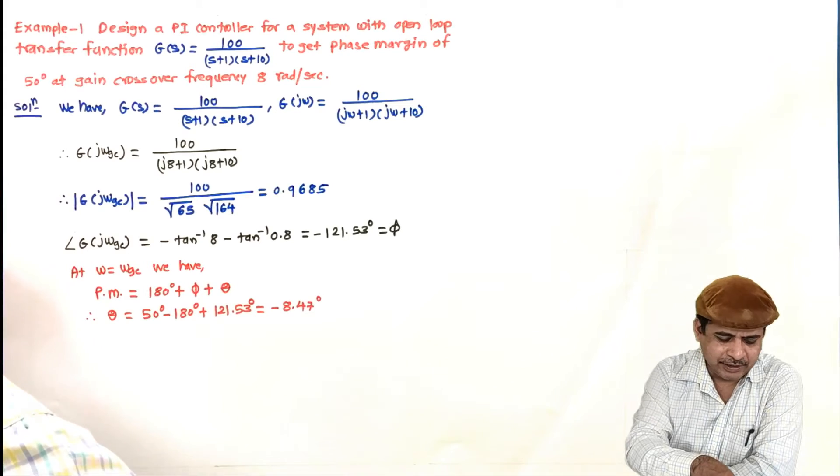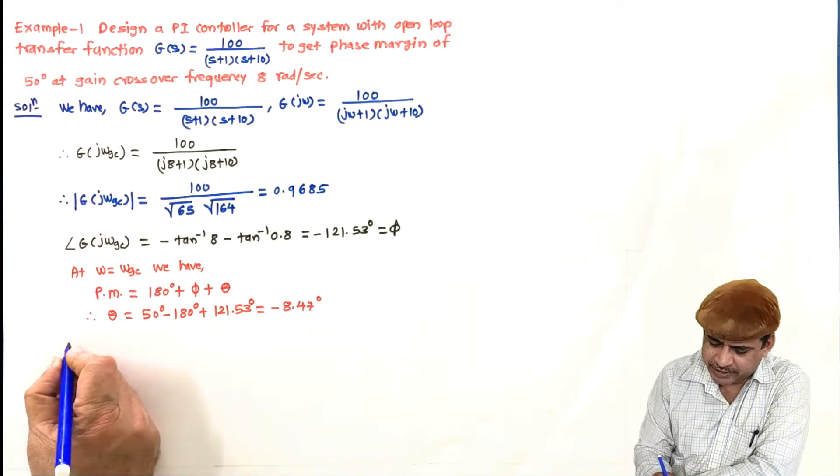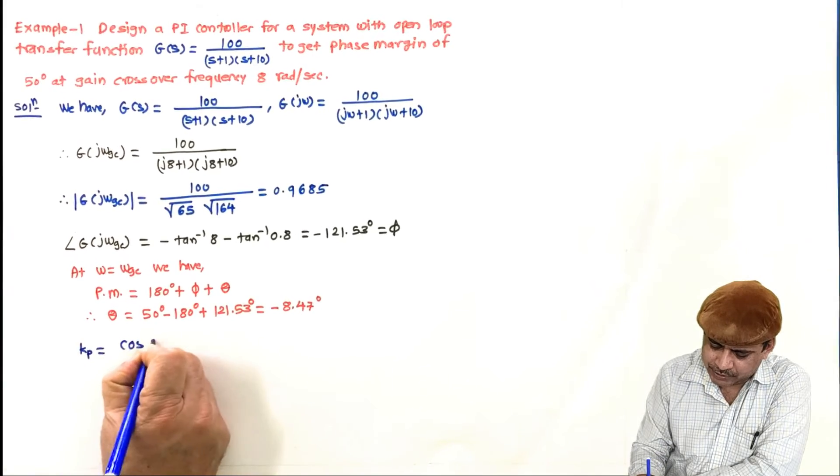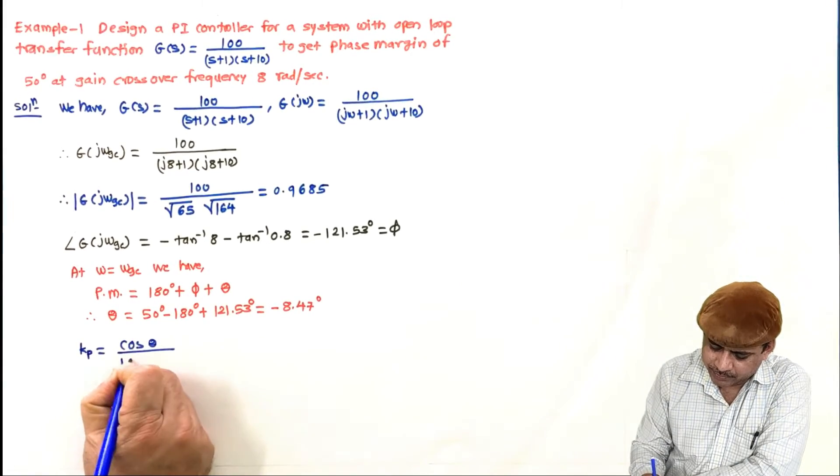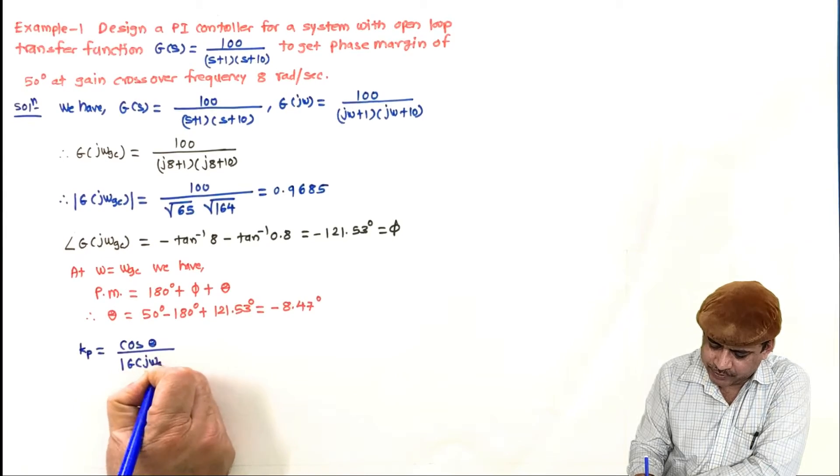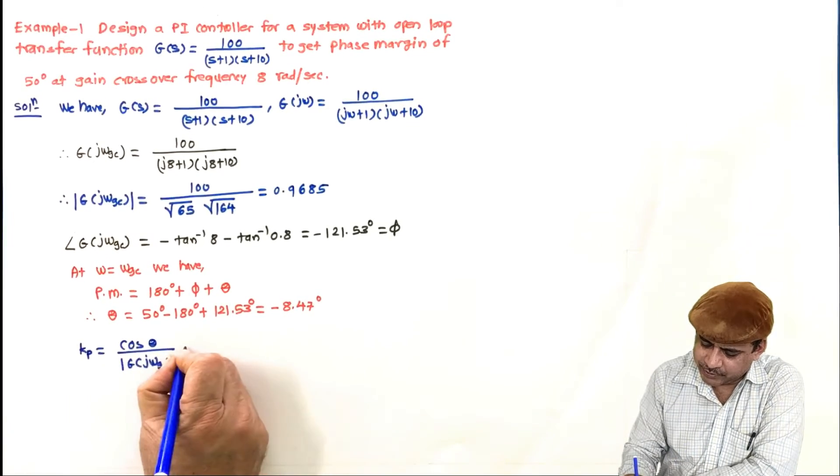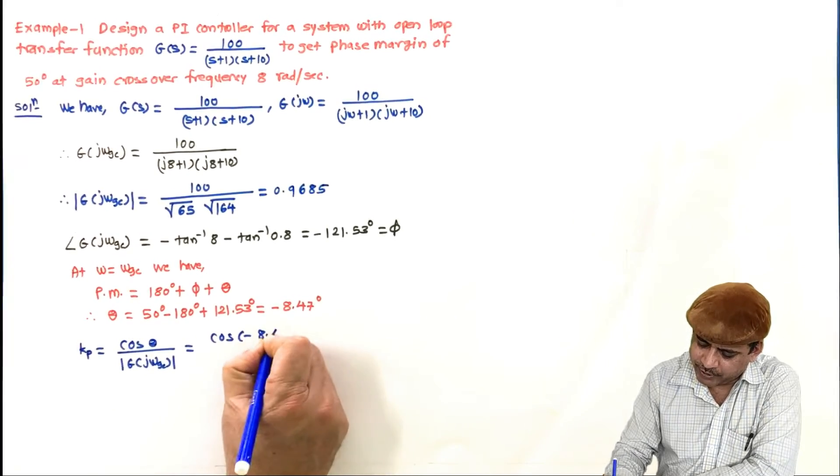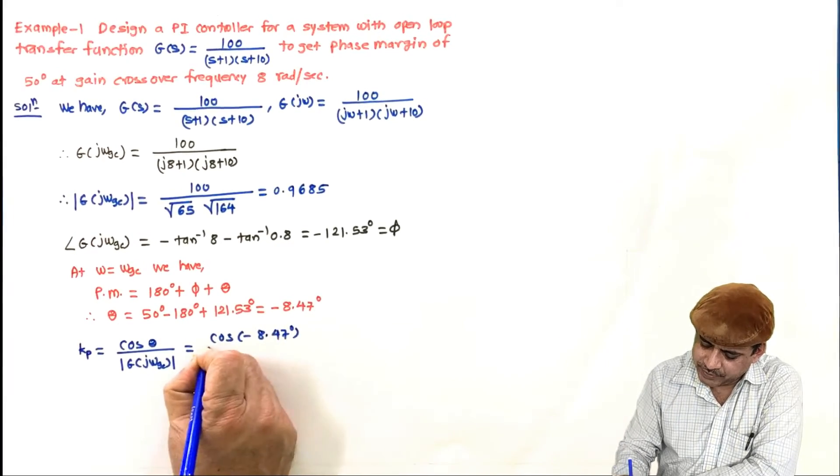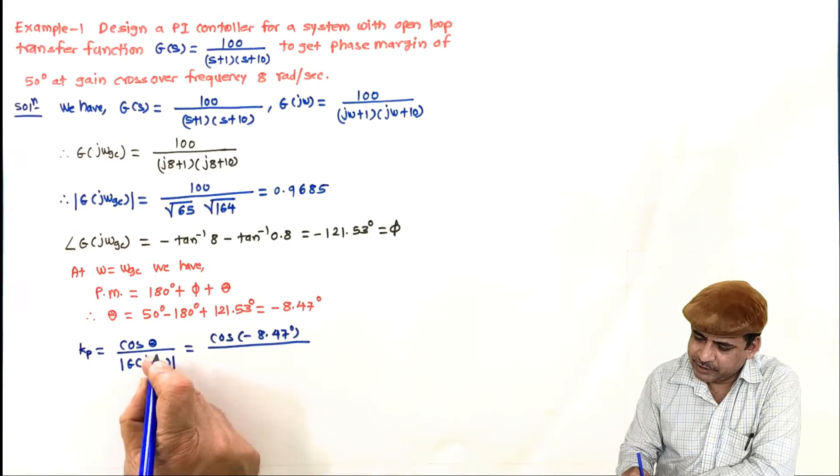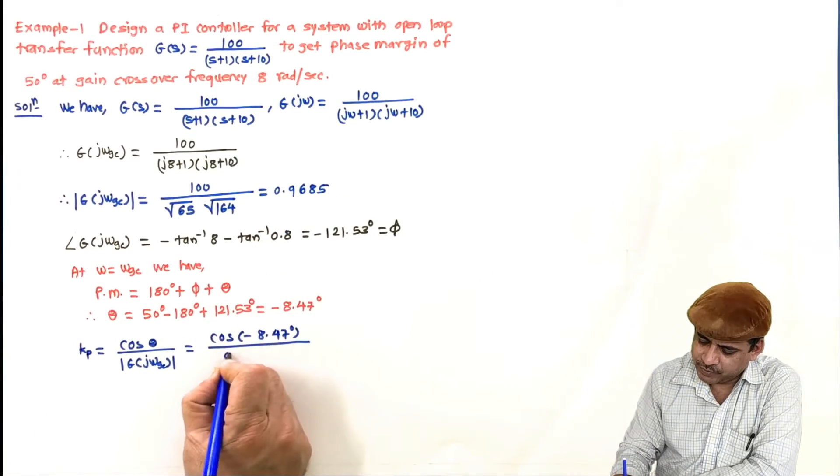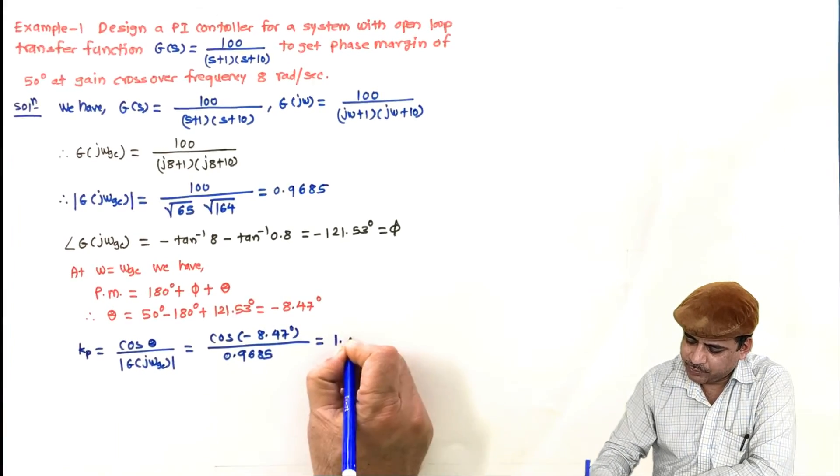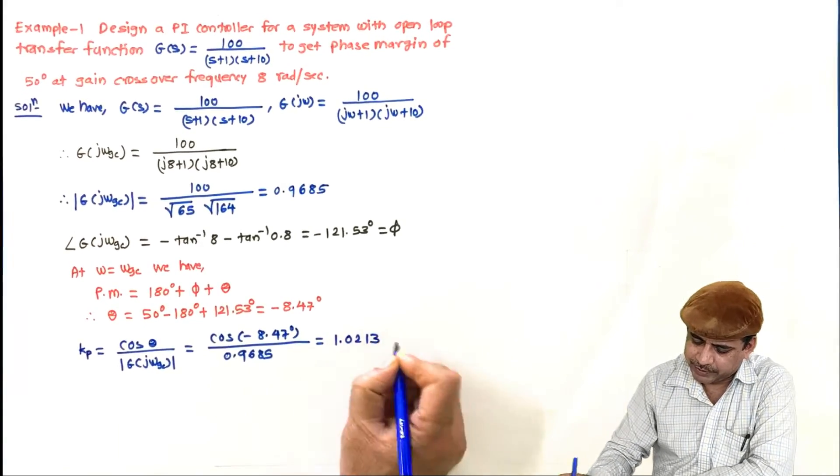So θ is also obtained. And now we will use the formula directly. We have the formula: Kp equals cos θ upon magnitude of the system at ω equal to ωgc. So cos θ is cos of minus 8.47° divided by this magnitude 0.9685, and it is coming 1.0213 for Kp.